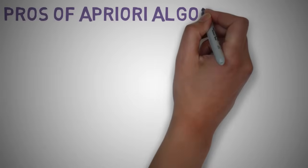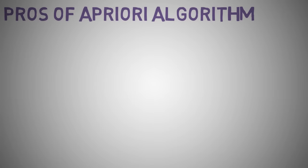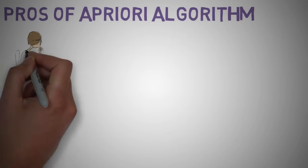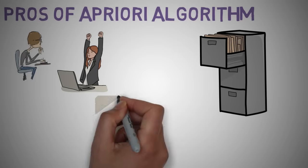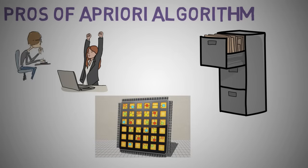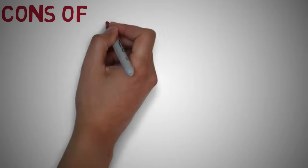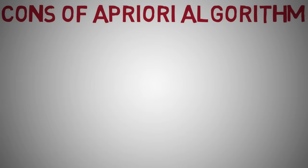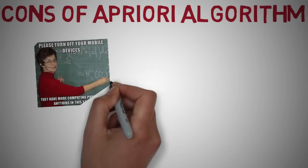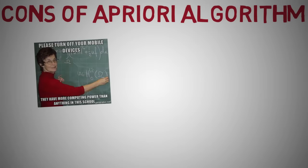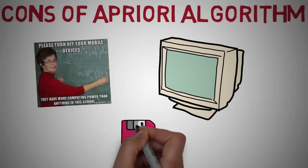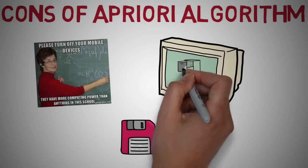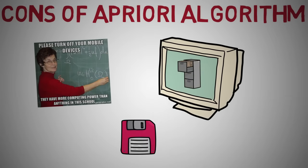Let's take a look at the pros and cons of the Apriori algorithm. It is an easy to implement and easy to understand algorithm, and it can be used on large item sets and is easily parallelized. On the cons side, it may sometimes need to find a large number of candidate rules, which can be computationally expensive. Calculating support is also expensive because it has to go through the entire dataset.